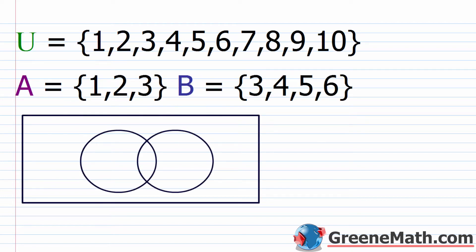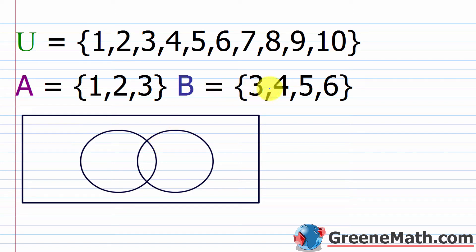So as an example, let's say we have a universal set which contains the elements 1 through 10. Then we have a set A, which contains the elements 1 through 3, and a set B, which contains the elements 3 through 6.